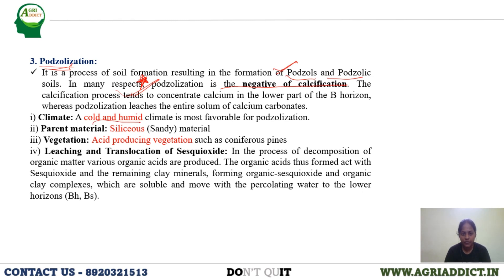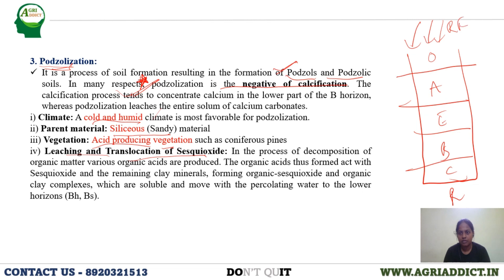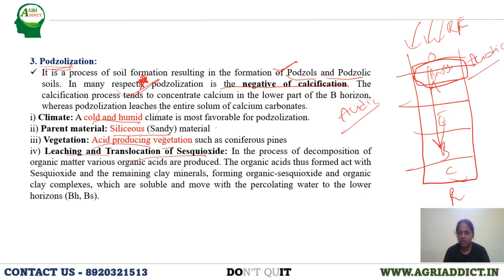The factors favoring podzolization are: cold and humid climate, siliceous (sandy) parent material, acid-producing vegetation like conifers, and leaching and translocation of sesquioxides. In the soil profile — O, A, E, B horizons — with high rainfall, bases get leached down. Since the parent material is acidic and bases are getting leached, the resultant pH of the upper horizon becomes acidic.